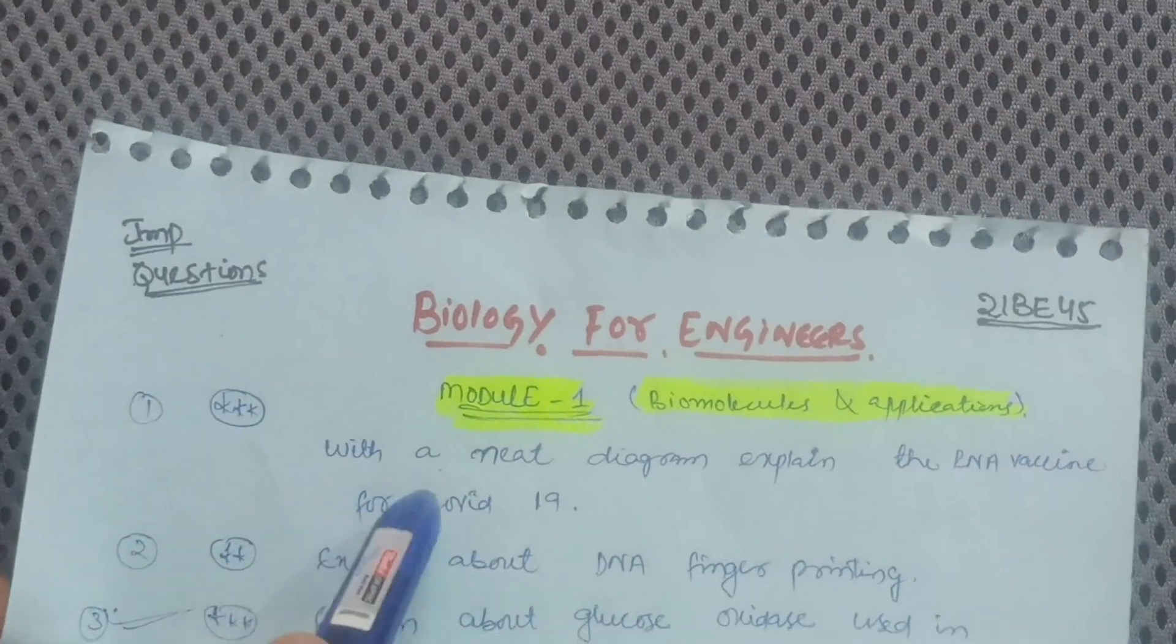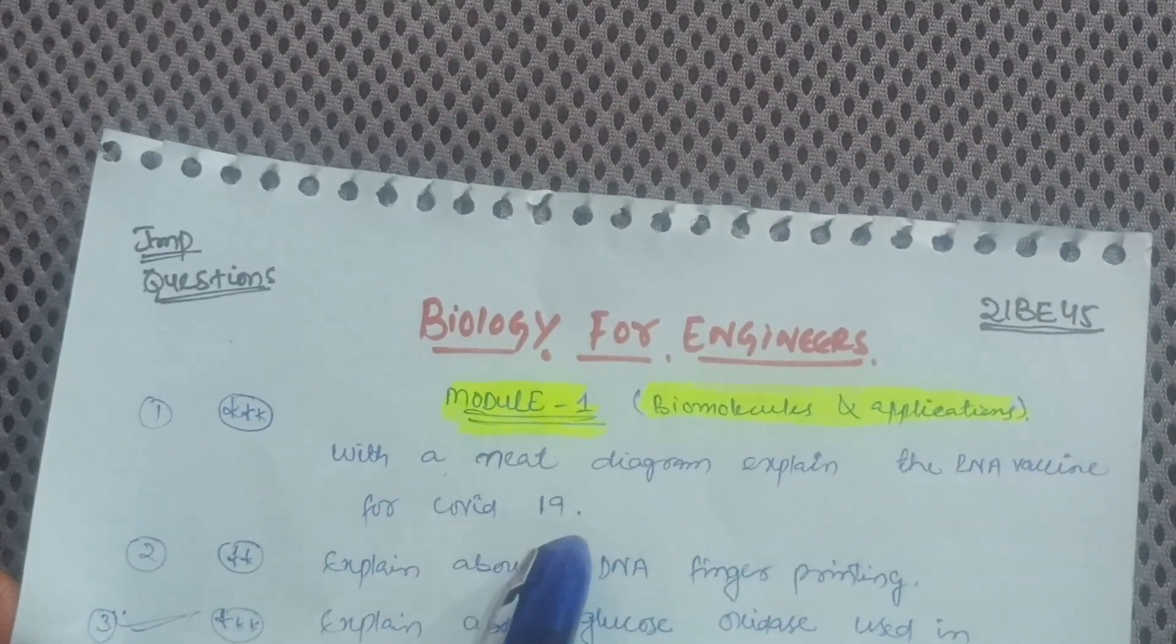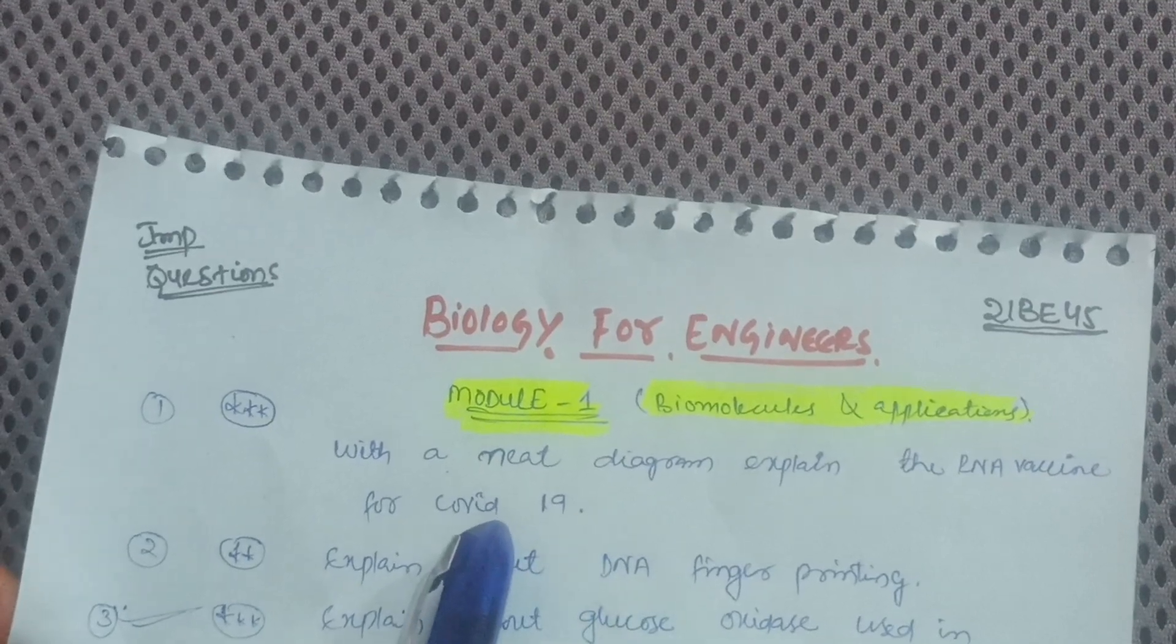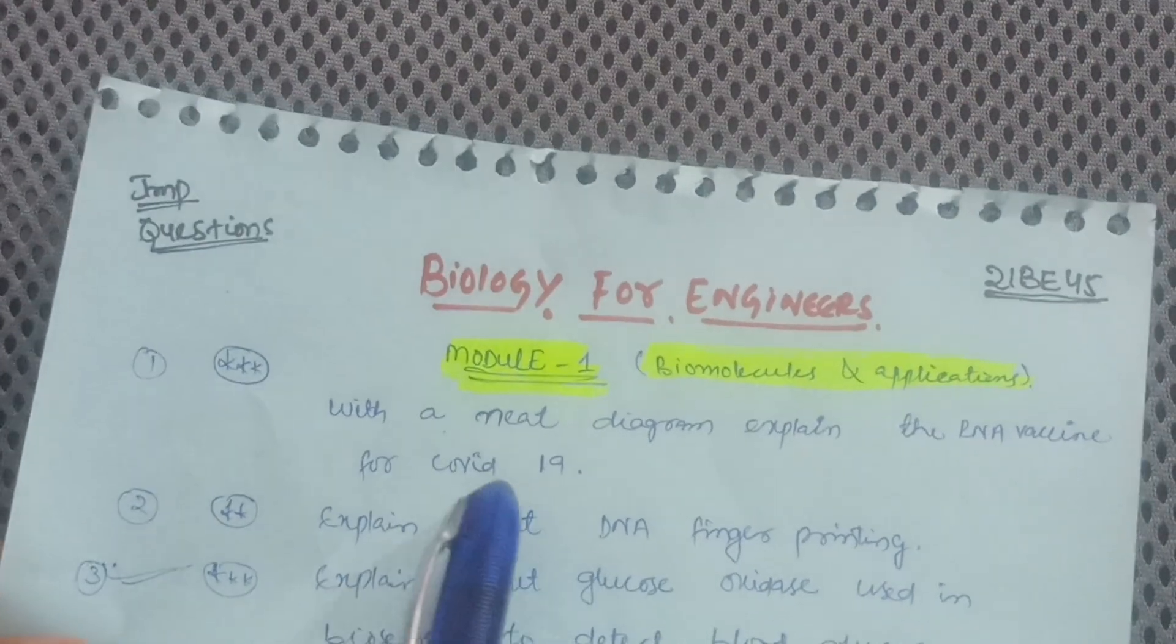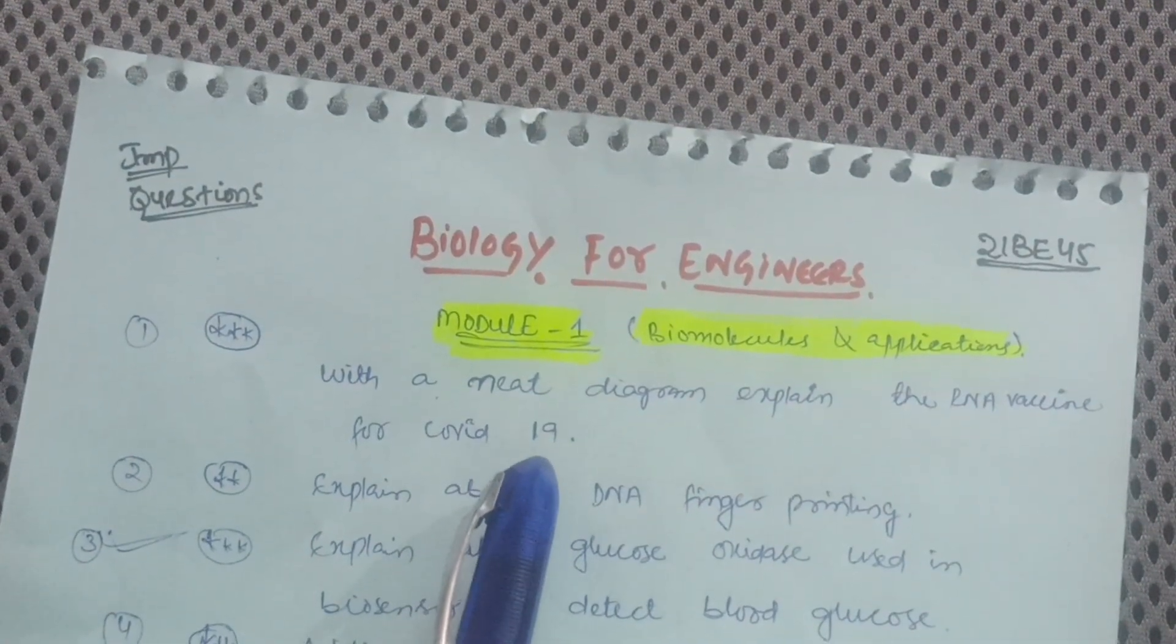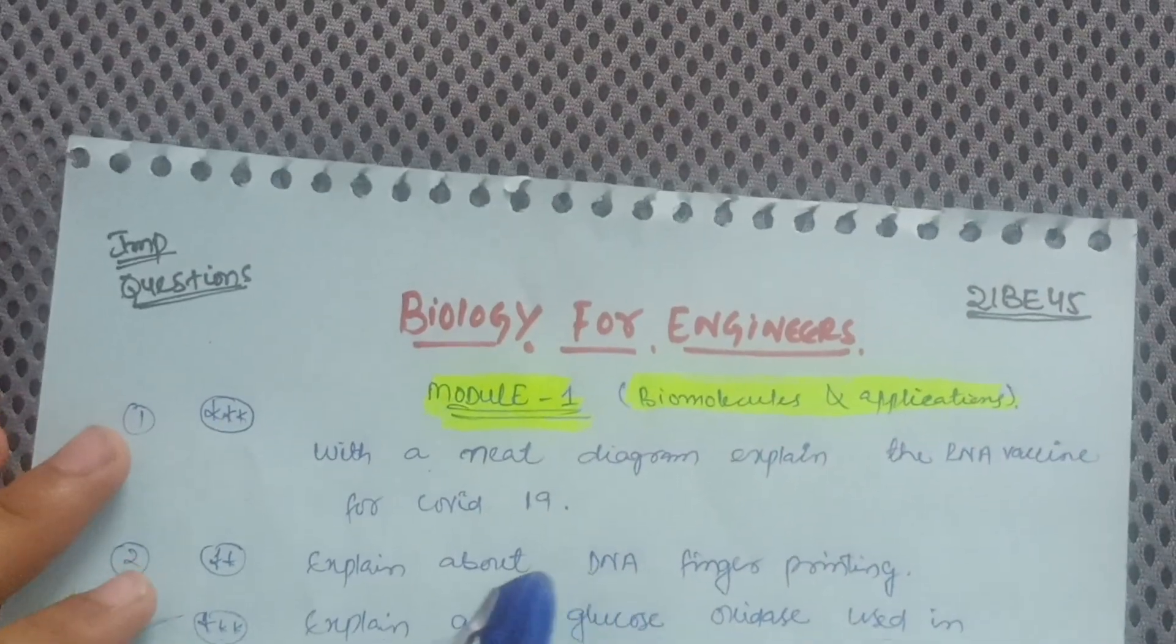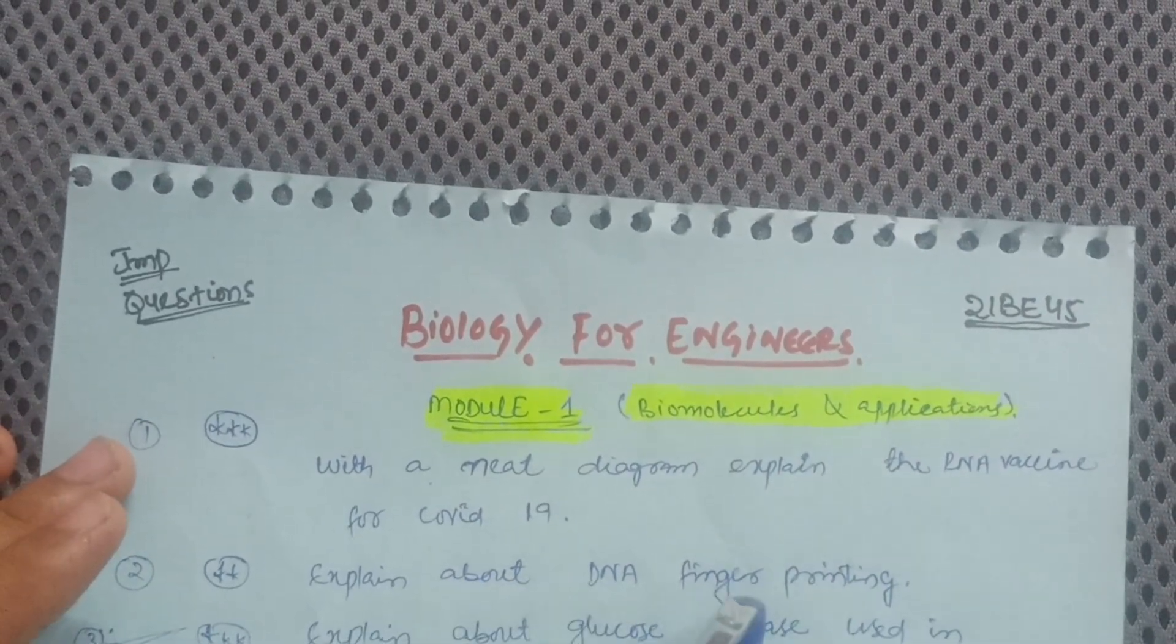Let's discuss without wasting any time some important questions related to this subject. First one is, with a neat diagram, explain the RNA vaccine for COVID-19, as it has hindered all the world. It becomes the most important question as far as VTU examination is concerned.